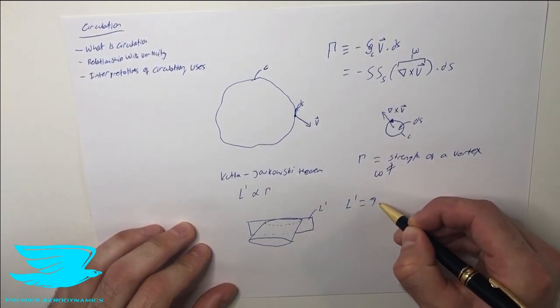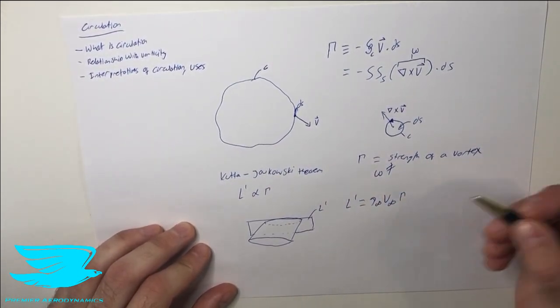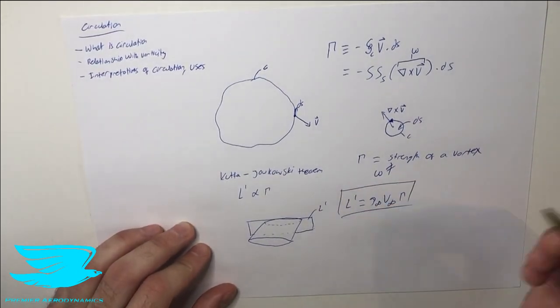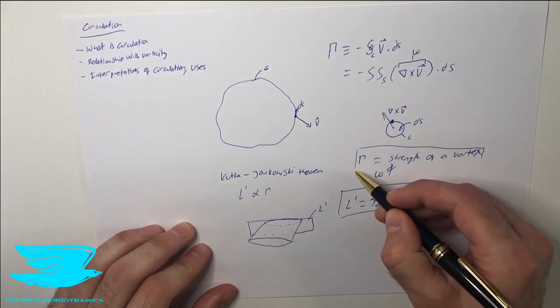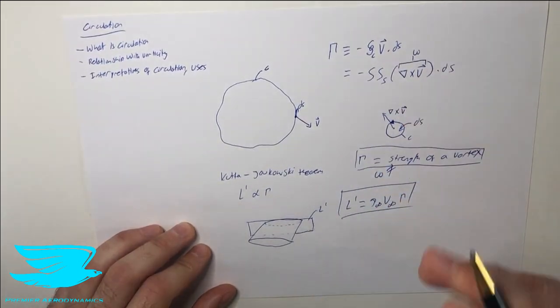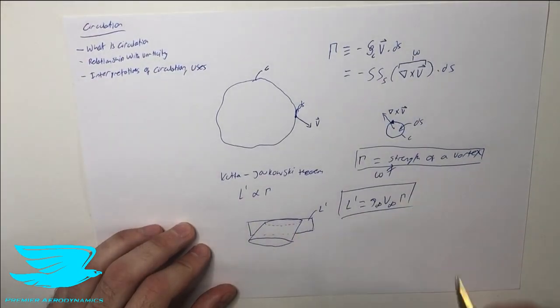If we know the circulation, we can then calculate what the lift per unit span is. The lift per unit span equals the free stream density times the velocity, the free stream velocity times the circulation. So this is a very powerful equation. We can now figure out what the strength of a vortex is from the circulation, and we can figure out how much lift is being produced at this point on the airfoil.